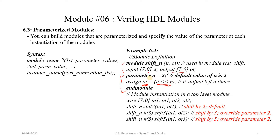Whatever the value of n is — here if you see, the value of n is 2 — the input signal will get shifted by 2 and then it will get assigned to our output signal. So this is a module which basically performs a shift operation.